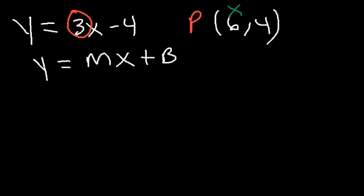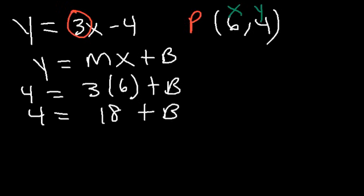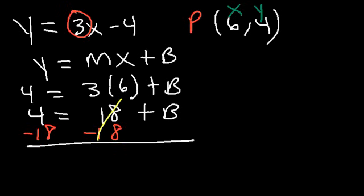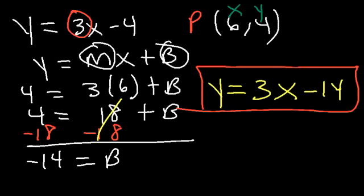Let's plug in x, which is 6, and 4 for y. So 4 is equal to 3 times 6 plus b. 3 times 6 is 18. If we subtract 18 from both sides, we can see that b is going to be 4 minus 18, which is negative 14. So now we can write the equation of the line: y is equal to 3x minus 14. And that's how you write the equation in slope-intercept form.